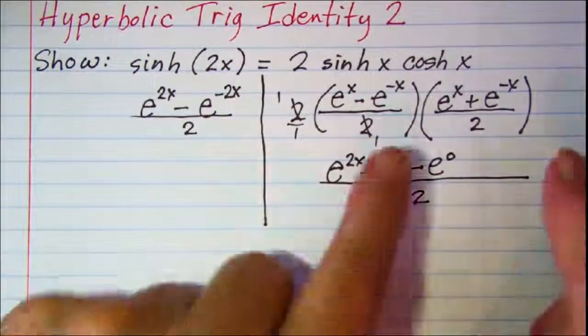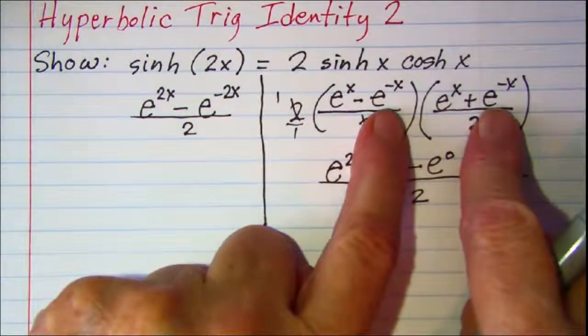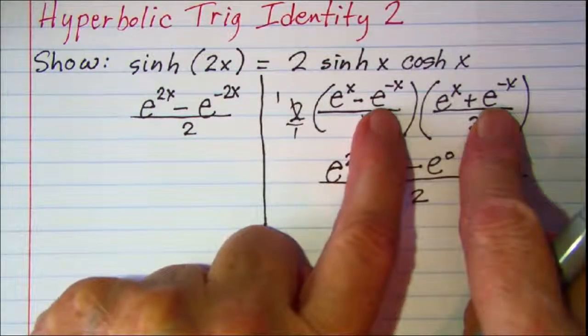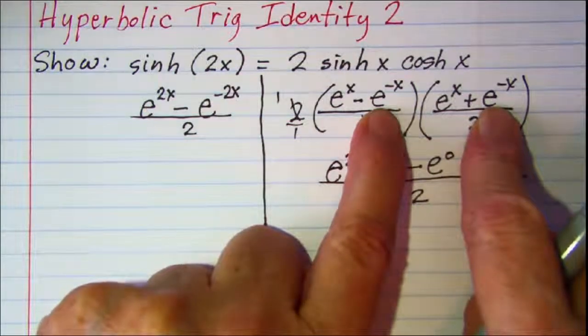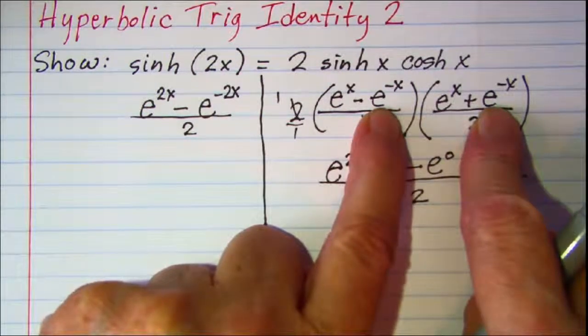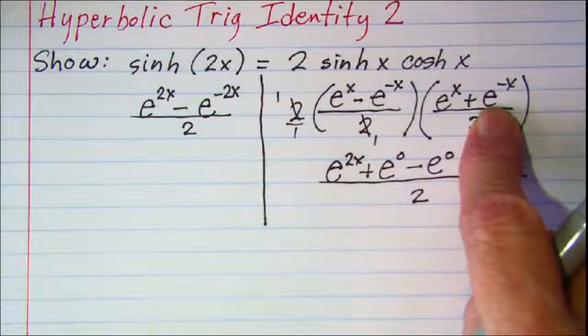And then when I multiply the last ones I have negative e to the negative x times e to the negative x. That's a negative e to the negative 2x.